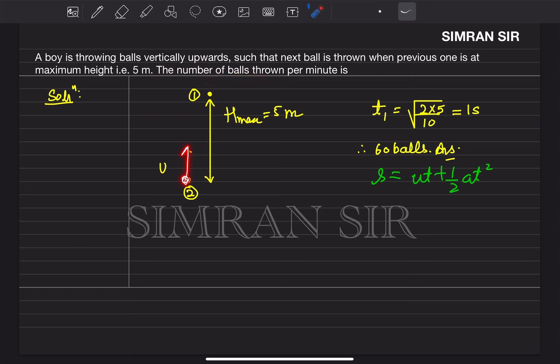A boy has thrown ball number 1 from below and it went to 5 meter height. When ball 1 reached the maximum height, he threw ball number 2. When ball 2 reached the maximum height, he threw ball number 3. So how many balls will be thrown in 1 minute?